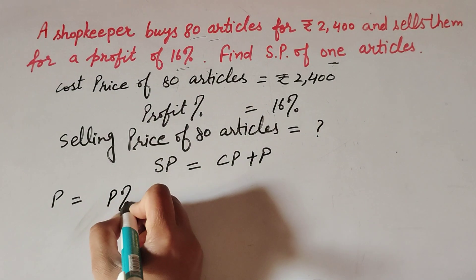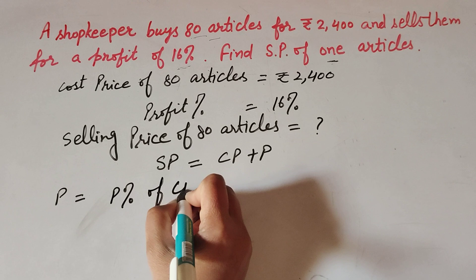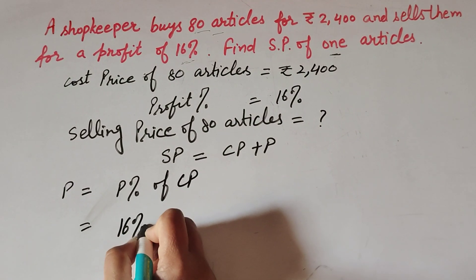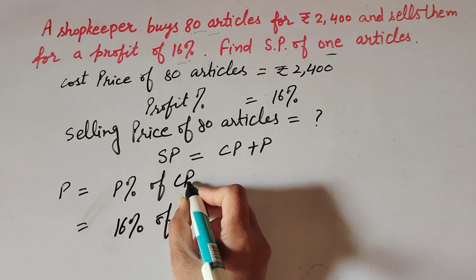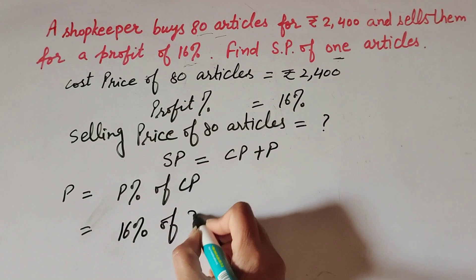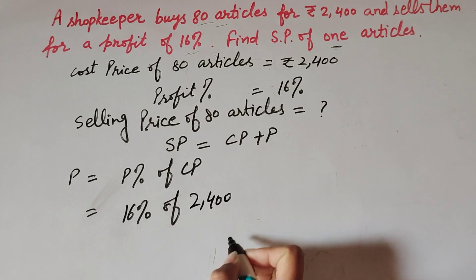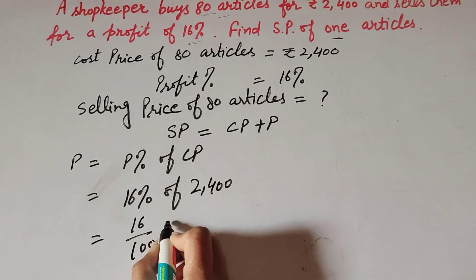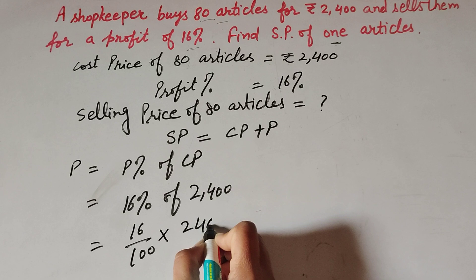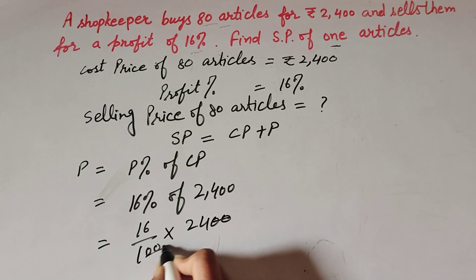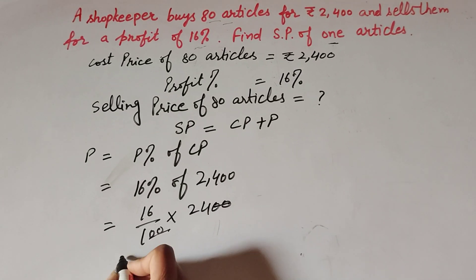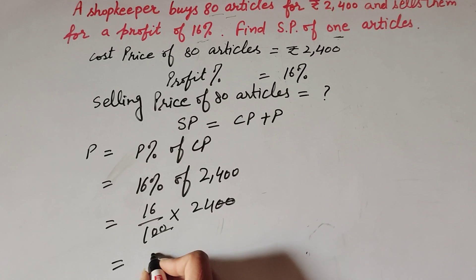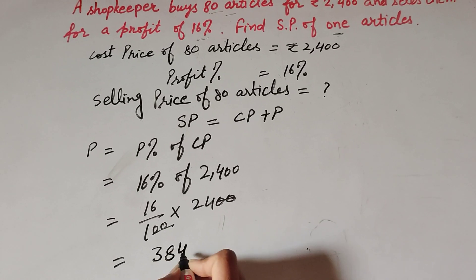Profit is equal to profit percentage of cost price. Profit percentage is 16 percent of cost price, which is 2400. So 16 percent of 2400 is equal to 16 over 100 multiplied by 2400. Two zeros in numerator and two zeros in denominator cancel, giving 60 multiplied by 24, which equals 384.